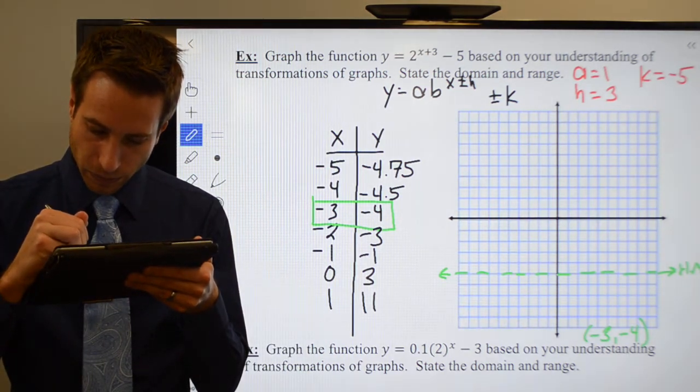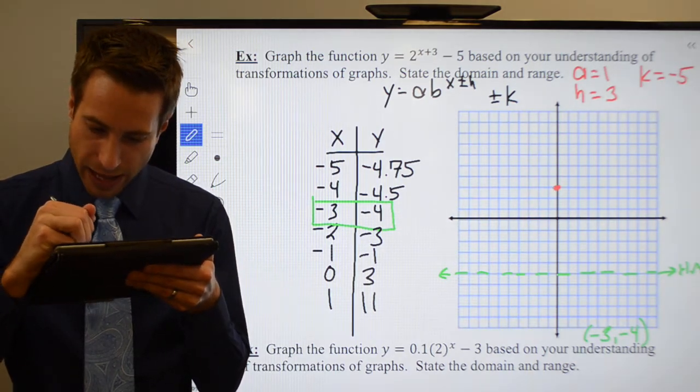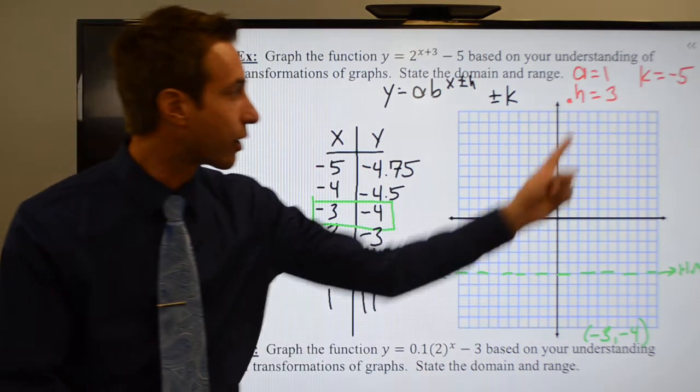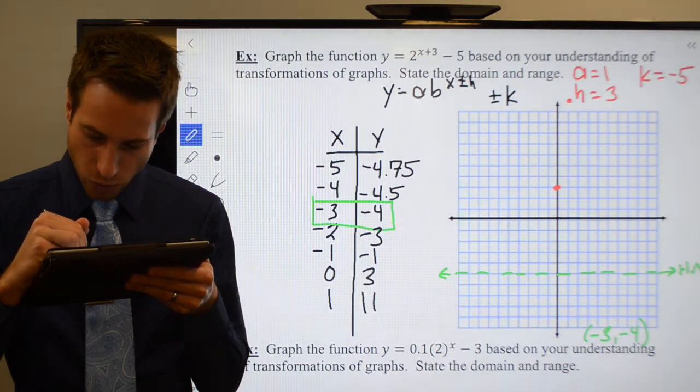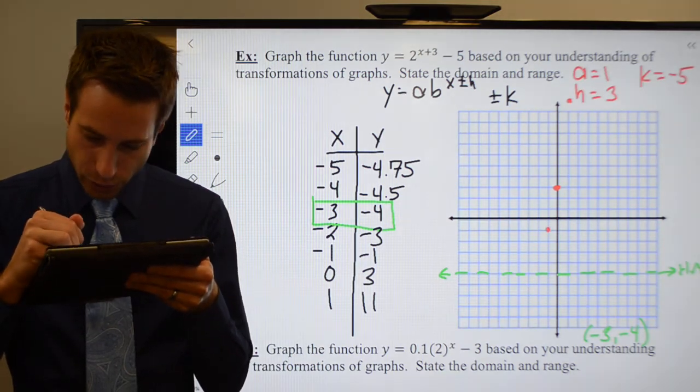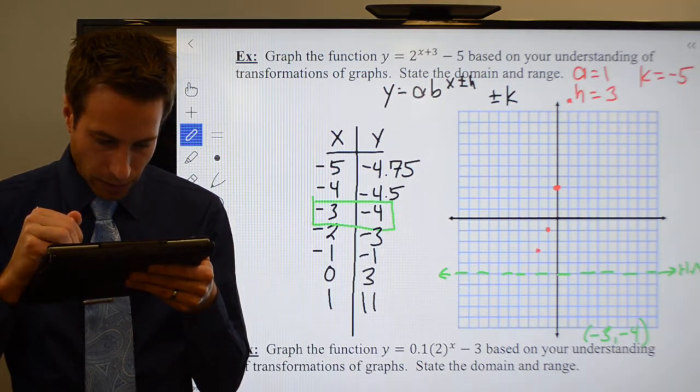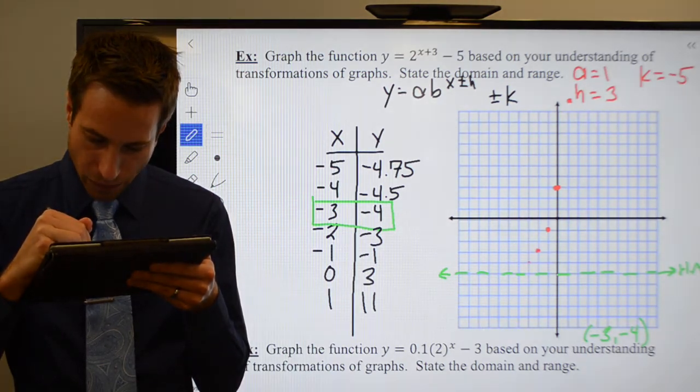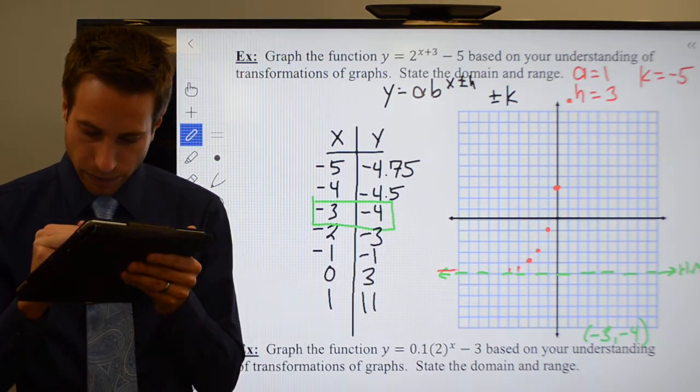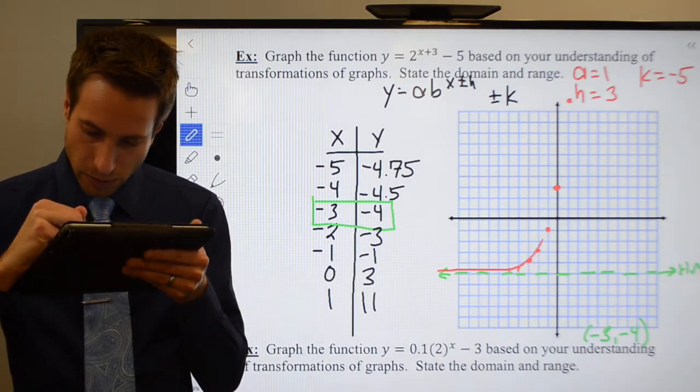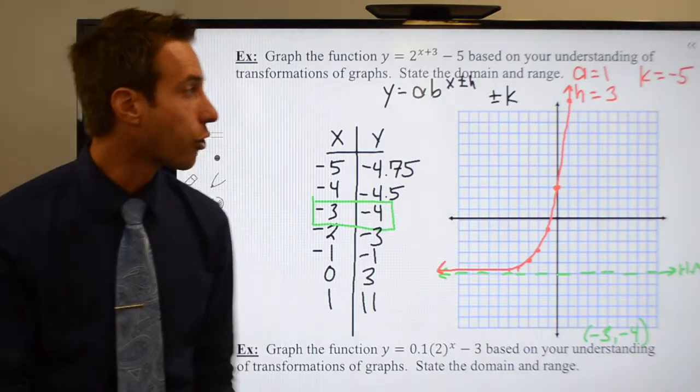Zero, three. One, eleven will be just off my graph somewhere right up about there. Negative one, negative one. Two minus, negative two minus three. Negative three, negative four there, and there. Yeah, that's pretty good.